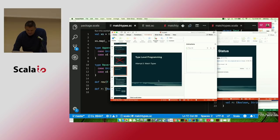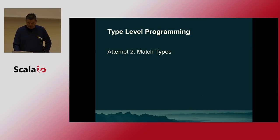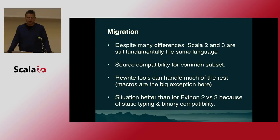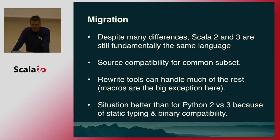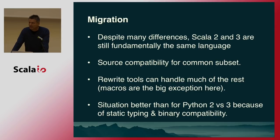The last thing is about migration. Despite all the differences, Scala 2 and 3 are still fundamentally the same language. There is a common subset, which is quite powerful, that both of them map to, so it should be easy to cross-build for a while. Furthermore, we have extensive rewrite tools that can handle much of the rest — except for macros. Macros are the big thing because they can't be automatically rewritten, but most other things can. The other big thing is that because of static typing and binary compatibility, I think the migration will be much smoother than the Python 2 to 3 example that people often cite as a warning. If there are incompatibilities, they're typically type errors — you can fix them before you go into production.